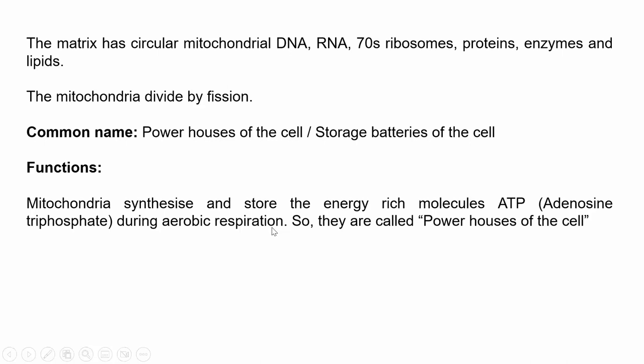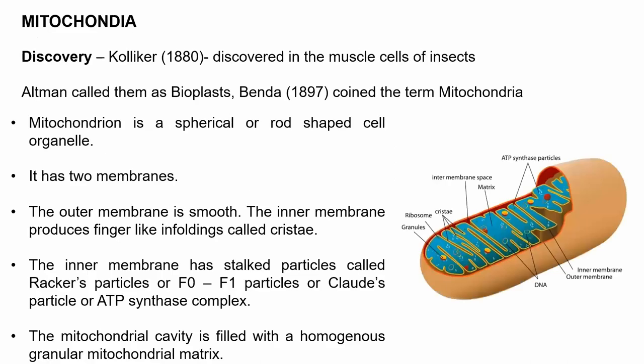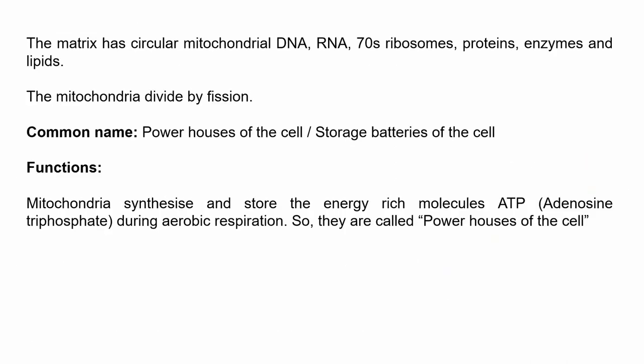One important feature of mitochondria is that it has its own DNA — its own genetic material in the form of circular mitochondrial DNA — along with RNA, 70S ribosomes, some proteins, enzymes and lipids. Mitochondria divide by the process of fission, just like bacterial cells. Their main function is to synthesize and store energy-rich molecules ATP during aerobic respiration, which is why they are called the powerhouse of the cell.